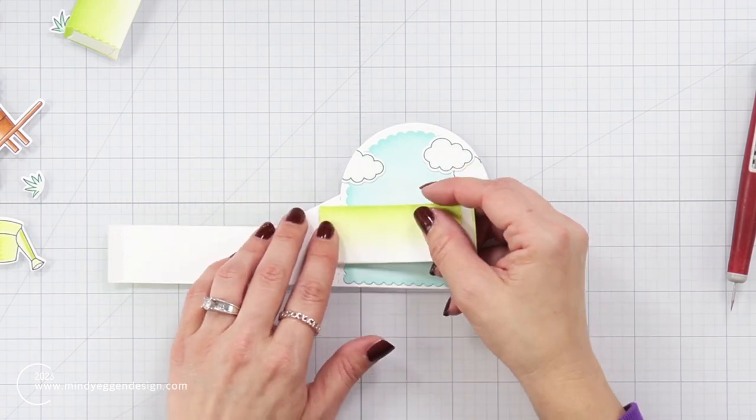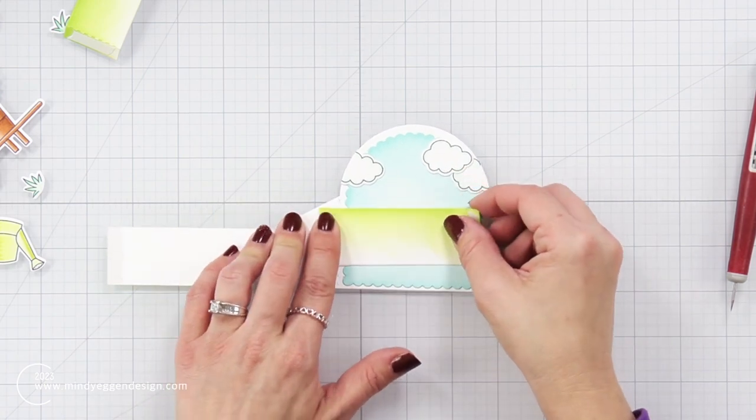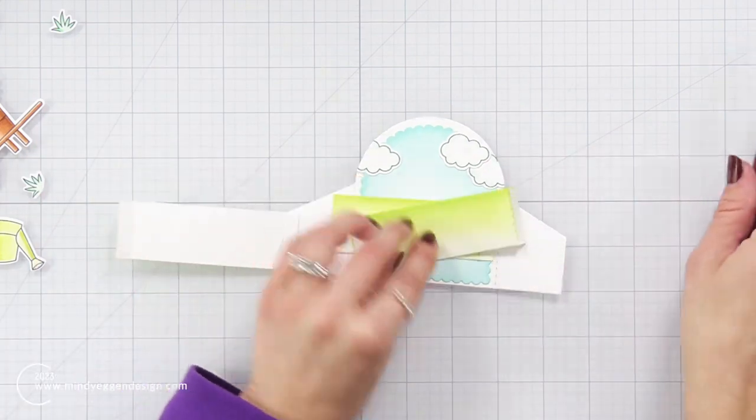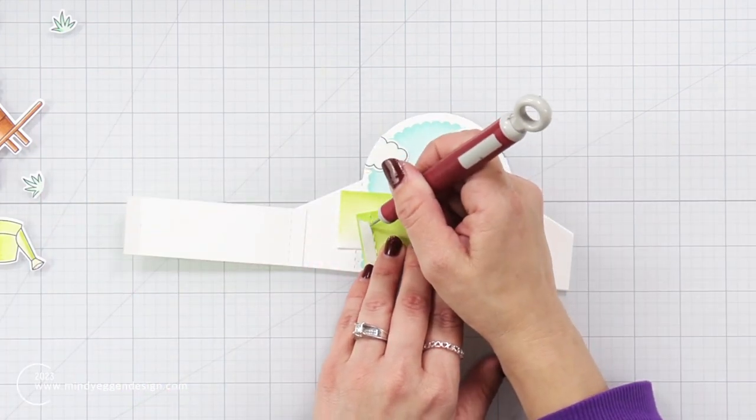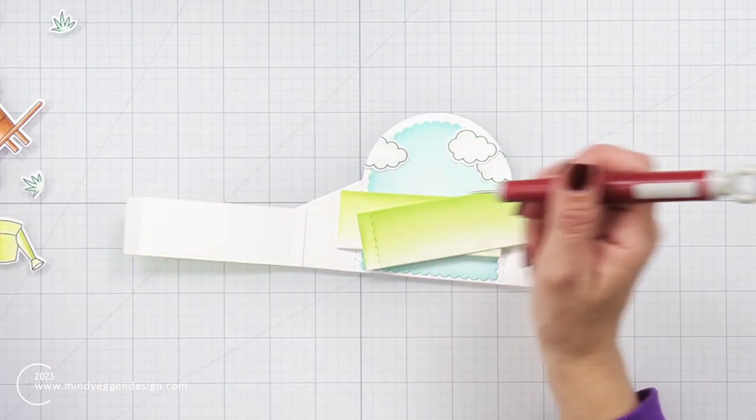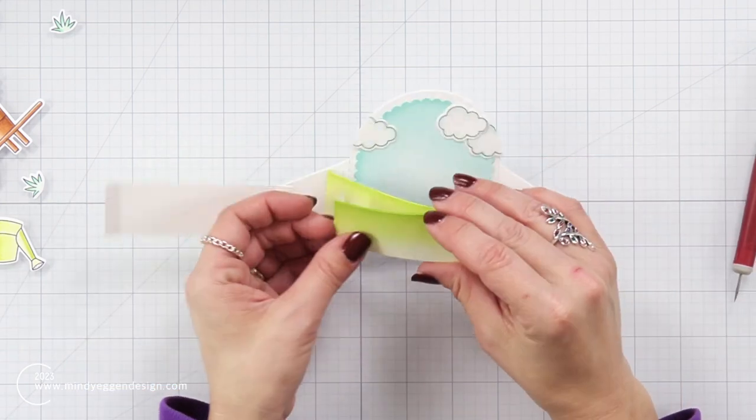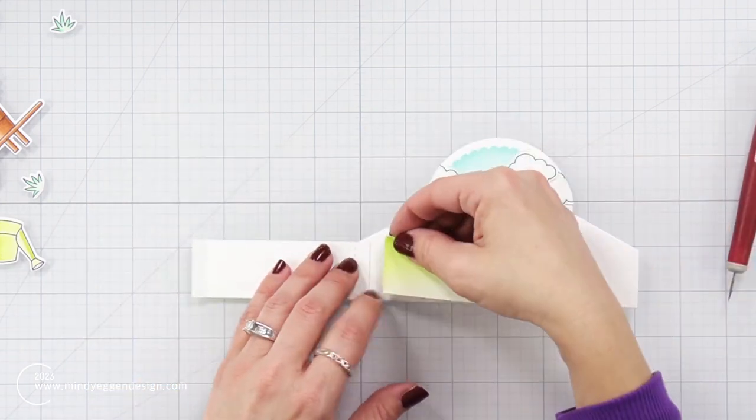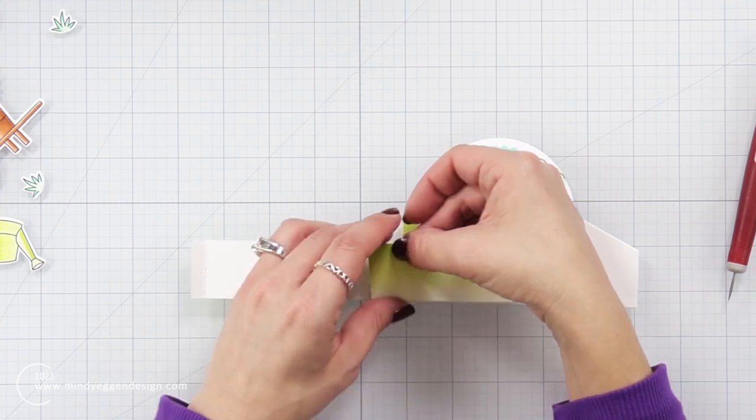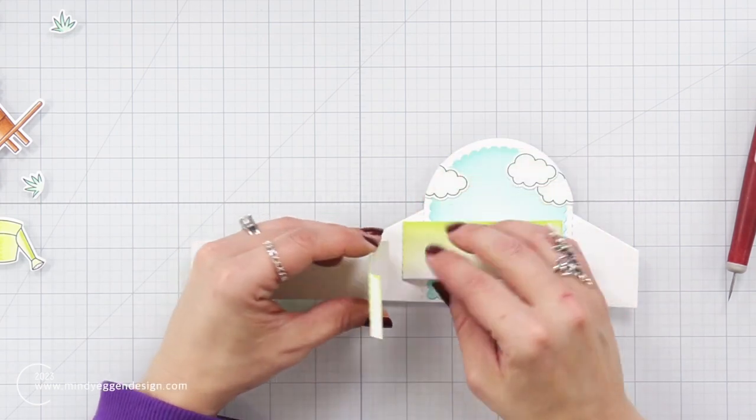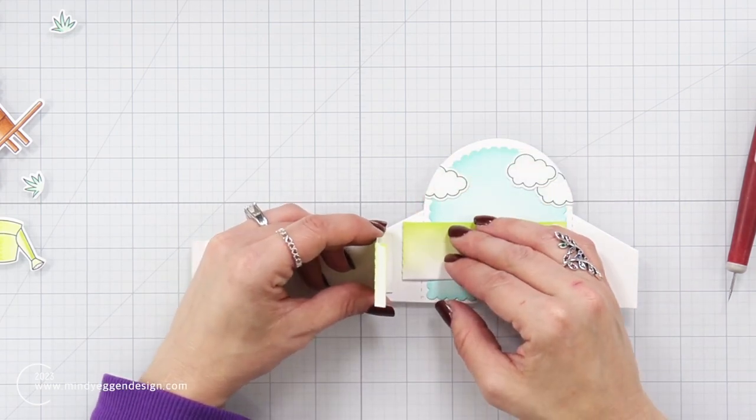So I removed the backing of one side. I placed that down so it's a little bit in from the edge of my box. And I'm going to repeat that. I'm going to go through, remove the backing of that one. And this one I'm going to place in between these two pieces I already placed down.